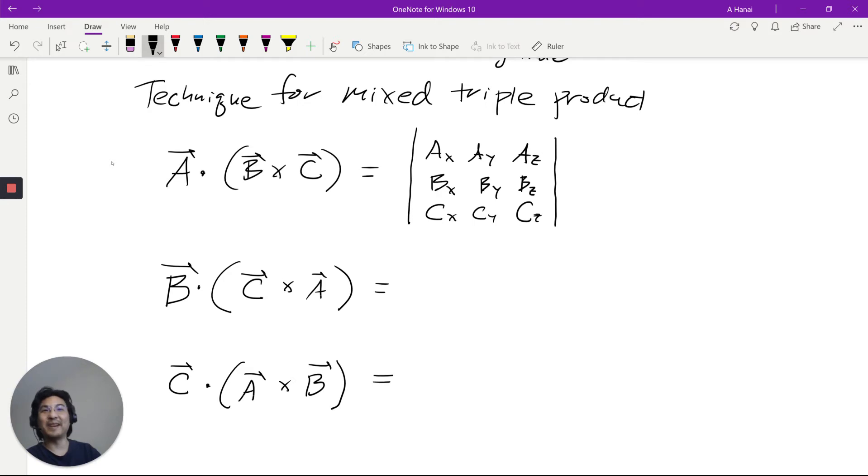Which is the same as, B goes in the first row, and then C, and then A. Same thing. Or, C goes in the first row, and then A, and then B. Because for matrices, it turns out, if you exchange rows, a minus sign pops up. And if you exchange yet another row, there's another minus sign. So, if you do two row exchanges, it's the same.